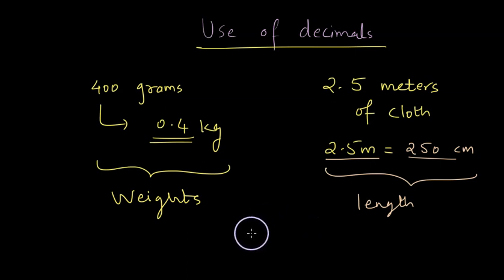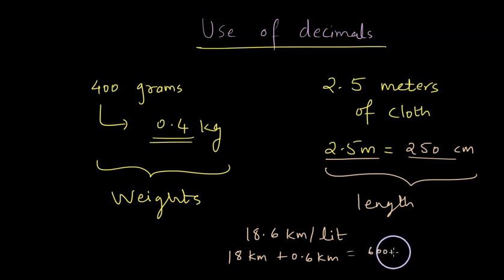When I look at my car's mileage, it often shows me 18.6 kilometer per liter. What is this 0.6 after kilometer? It's 18 kilometer plus 0.6 kilometer and this 0.6 kilometer is nothing but 600 meters. So my car travels 18 kilometers and additional 600 meters per liter on an average. So when you talk about different units, we come across decimals.